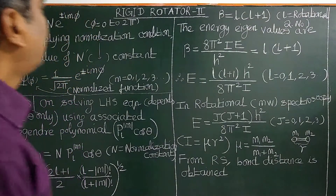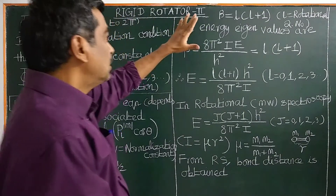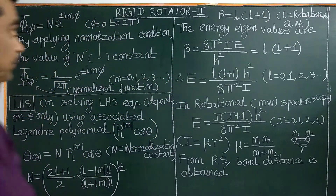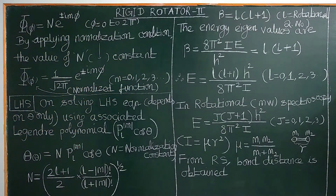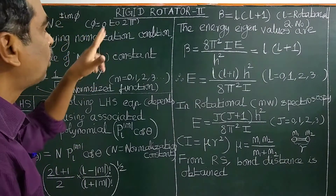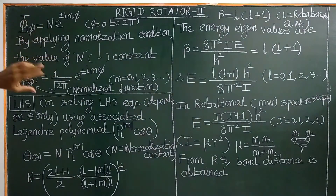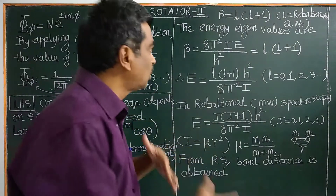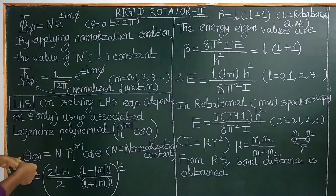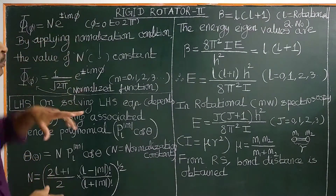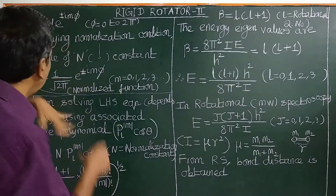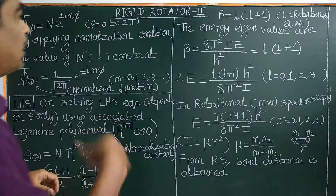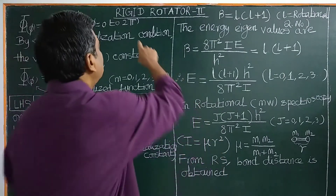Good morning, welcome. We have derived the operator for rigid rotator. The Schrödinger equation solution is the product of a theta function and a phi function. The wave function is also called spherical harmonics — it is the product of theta and phi, which we have studied. We have solved the Schrödinger equation for the rigid rotator, applying the postulates of quantum mechanics.